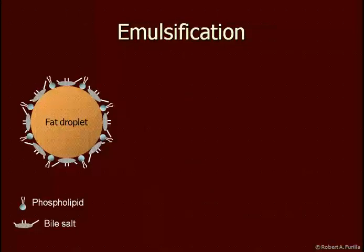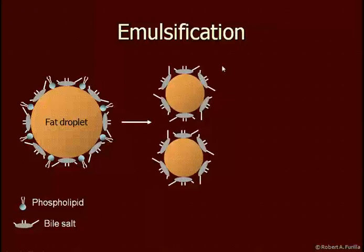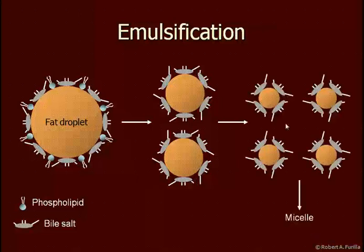Emulsification is the process of breaking down fat droplets. When a fat droplet enters the duodenum, bile salts and phospholipids surround it with the hydrophobic ends facing inward and the hydrophilic ends facing outward. When this fat droplet is agitated by the small intestine, it breaks up, and the smaller units are also surrounded by bile salts and phospholipids. This surrounding of the fat droplet inhibits the smaller units from coalescing and forming a larger droplet. In the small intestine, these fat droplets get smaller and smaller, eventually forming a micelle.